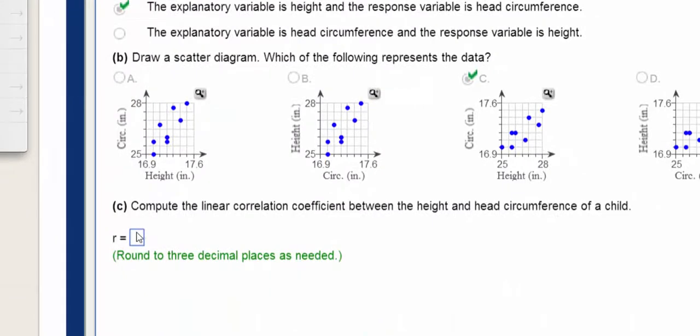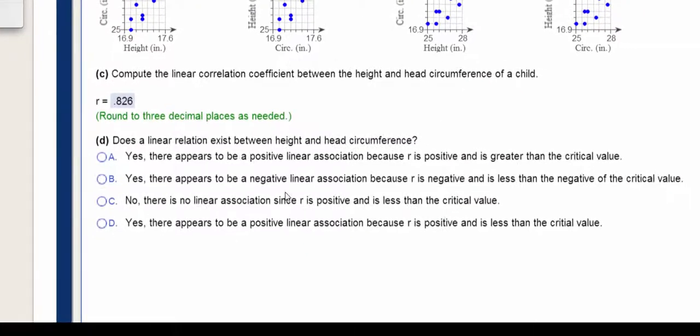And it says round to three decimal places. I press enter. We get the excellent job. And then it says, does a linear relation exist? Well, since my R value is close to one, I'm going to say yes, it's a positive linear correlation.